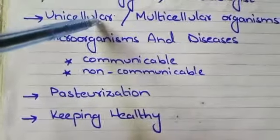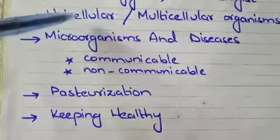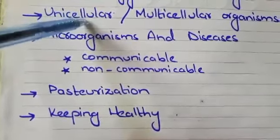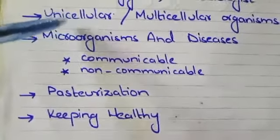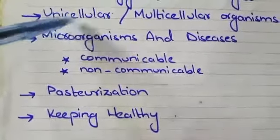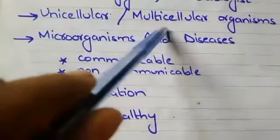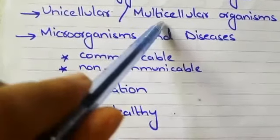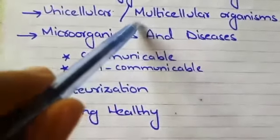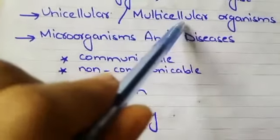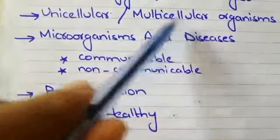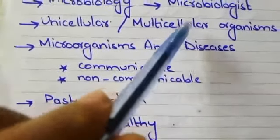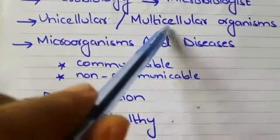Cellular means cell, so unicellular means those organisms that are made up of only one cell. Next is multicellular — multi means more than one and cellular means cell, so multicellular means those organisms that are made up of more than one cell.